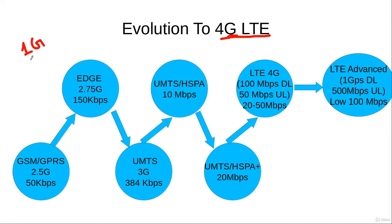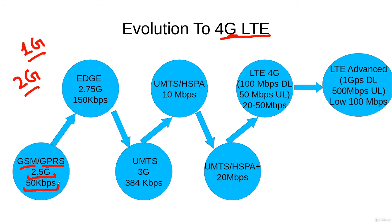The 1G systems were analog mobile communication systems, so they did not support data services. We then moved to 2G mobile communication systems, and GSM is the most widely used and deployed 2G technology. GPRS was added to enhance the data rates of 2G GSM systems, making it a 2.5G technology, where the average user data rate under normal circumstances was around 50 kilobits per second.